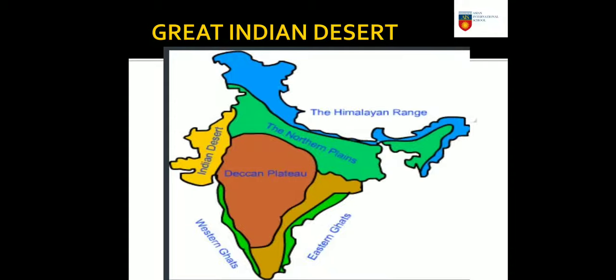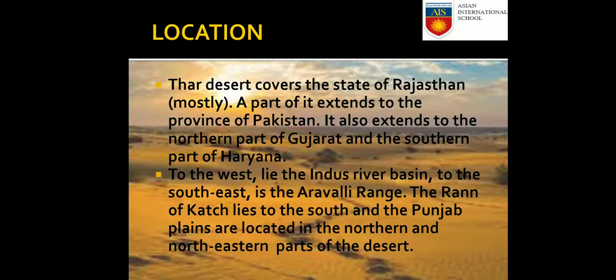The Thar Desert covers the state of Rajasthan mostly; a part of it extends into the province of Pakistan. It also extends to the northern part of Gujarat and the southern part of Haryana. To the west lies the Indus River basin; to the southeast is the Aravali Range; the Rann of Kutch lies to the south; and the Punjab Plains are located in the northern and northeastern parts of the desert.